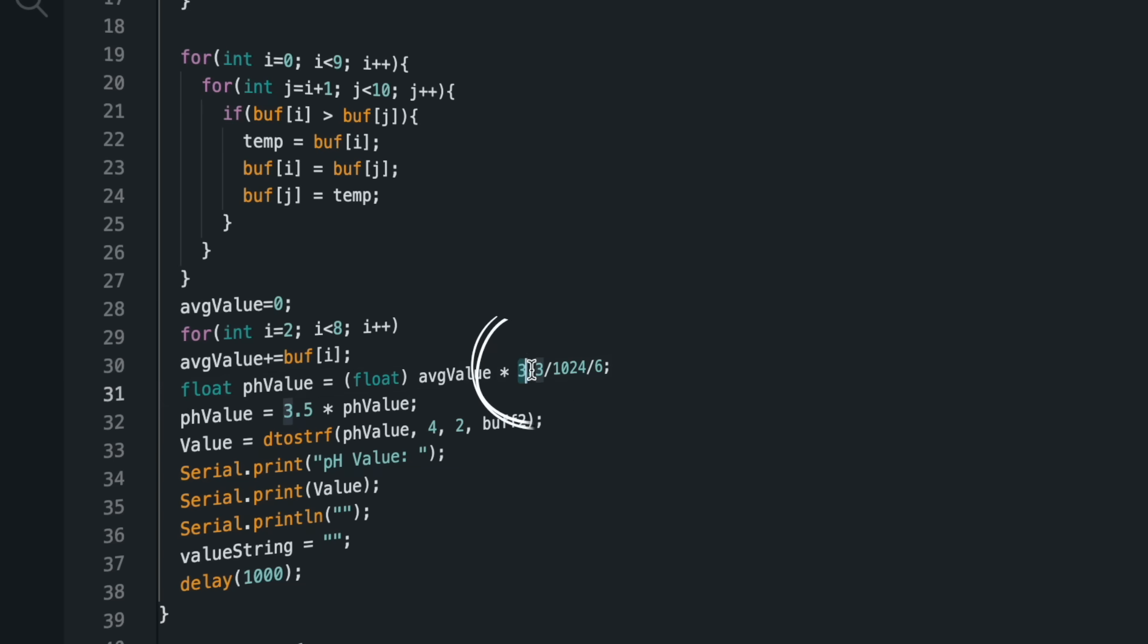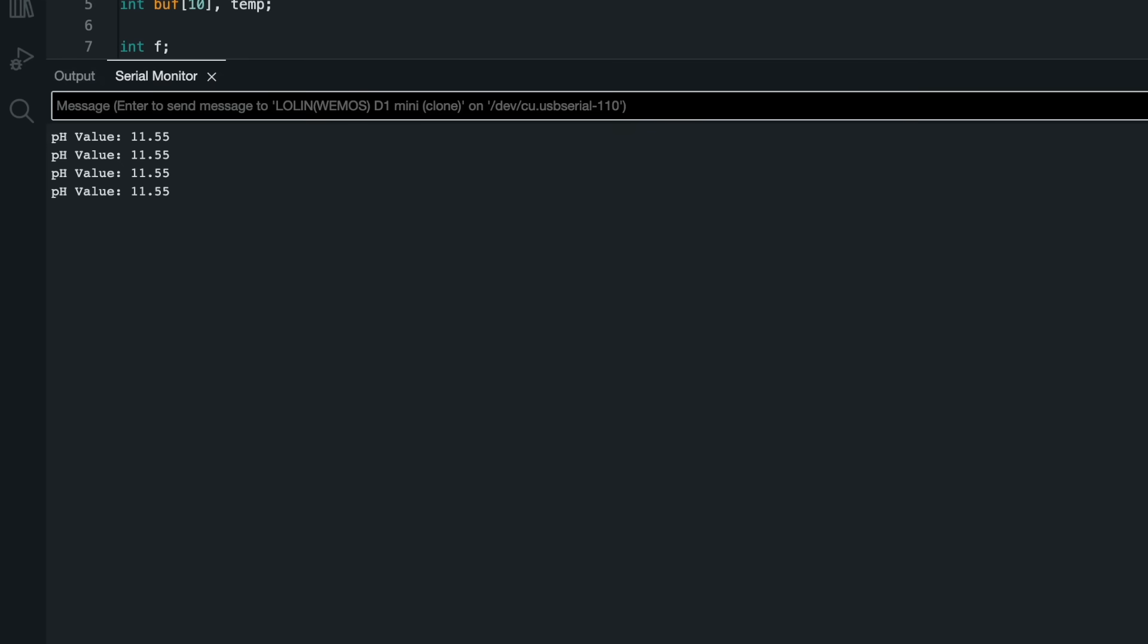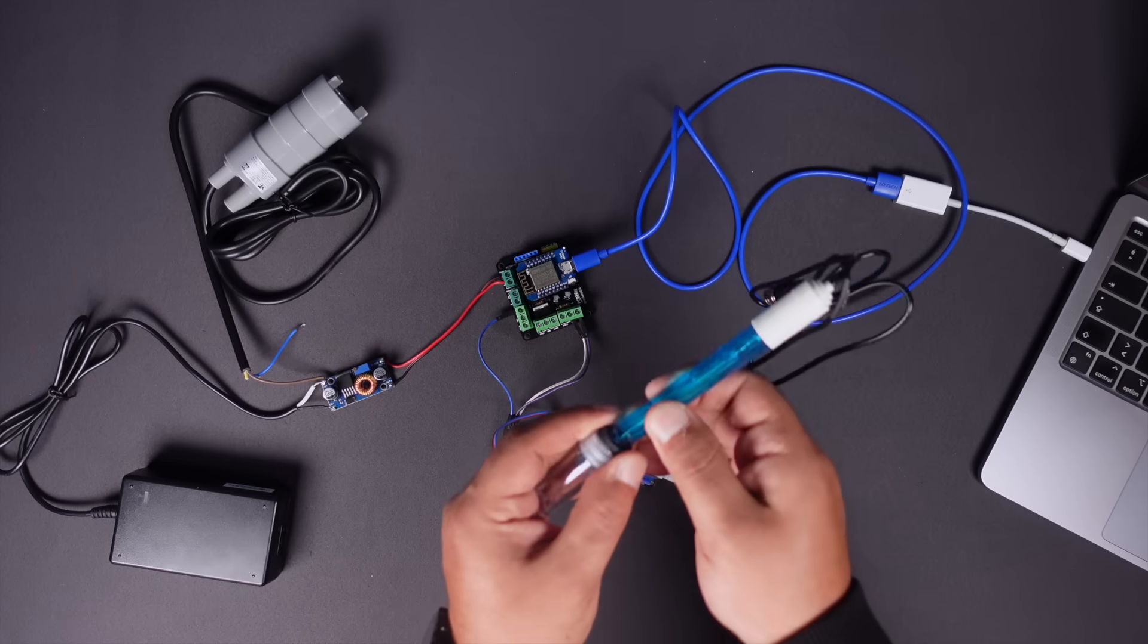If you are using a different board, this value should be updated with the analog voltage value provided by the board. Upload the code to the circuit, then turn on the serial monitor and observe the values. Since the pH probe has not yet been in contact with a liquid, the values are high as can be seen. Now let's immerse the probe in tap water.